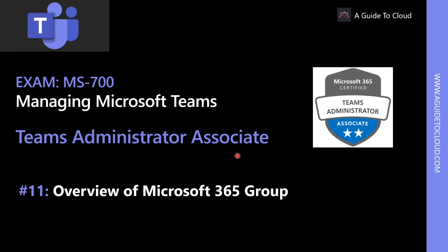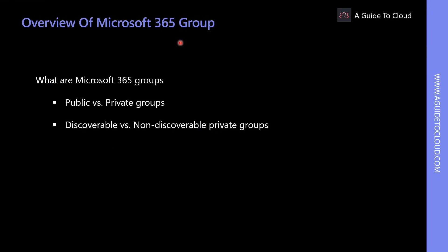Now let's talk about an overview of Microsoft 365 Groups. Microsoft 365 Groups — formerly known as Office 365 Groups — let you choose a set of people to collaborate with and easily set up a collection of shared resources. Adding members to the group automatically grants the needed permissions to all assets provided by the group.